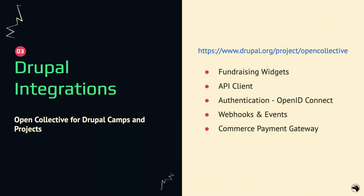Additionally there's an API client that allows you to access Open Collective data directly, and I've integrated it with OpenID Connect. You can do Drupal authentication through Open Collective, meaning you don't have to be responsible for proving who people are, you don't have to worry about spam or bots — that's all Open Collective's problem. Open Collective will send people back to your site authenticated. It's like 'login with Google' but login with Open Collective.